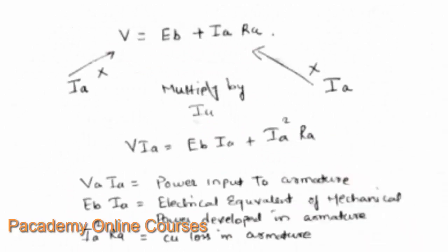Starting from the previous diagram, the supply voltage can be written as back EMF plus I_A·R_A, by applying Kirchhoff's voltage law. If you multiply both sides by I_A, you will get V·I_A equal to E_B·I_A plus I_A²·R_A. So V·I_A here is the power input to the armature — that is the power input from the supply side.